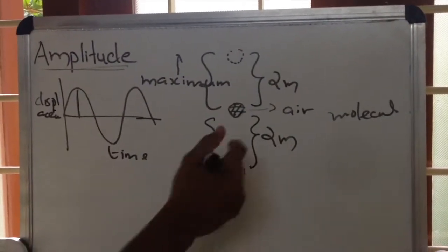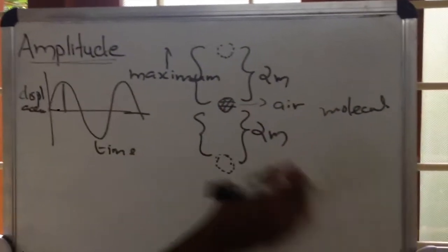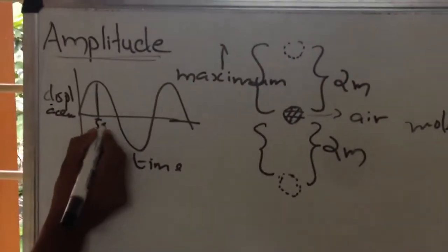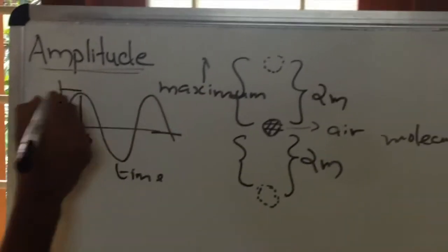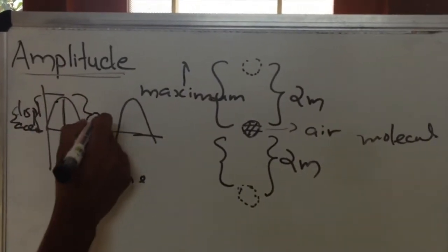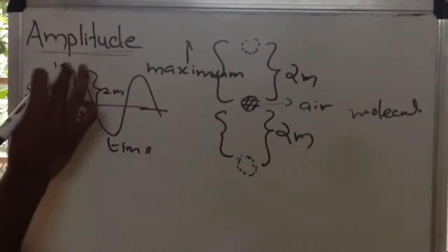Suppose initially the stopwatch is at 0 seconds, and after 5 seconds it reaches a 2 meter height. When we are looking at the graph, at 5 seconds the height will be 2 meters. So we can represent this height as the amplitude.